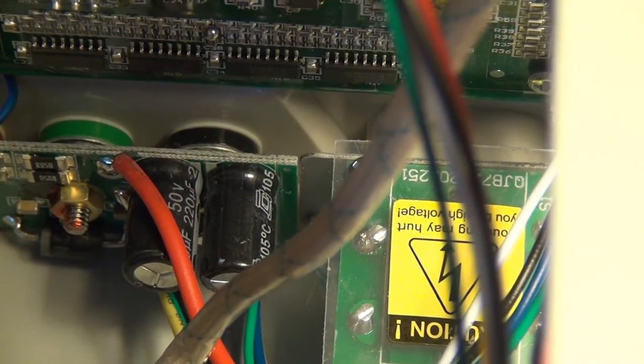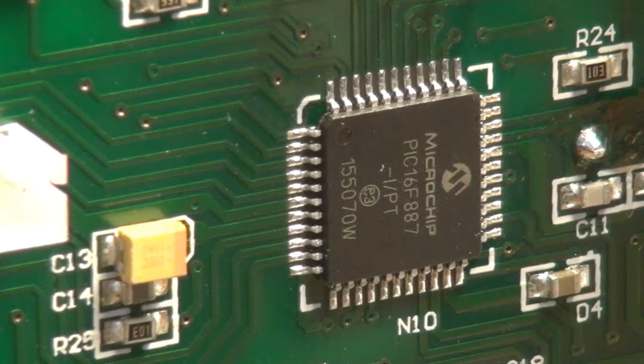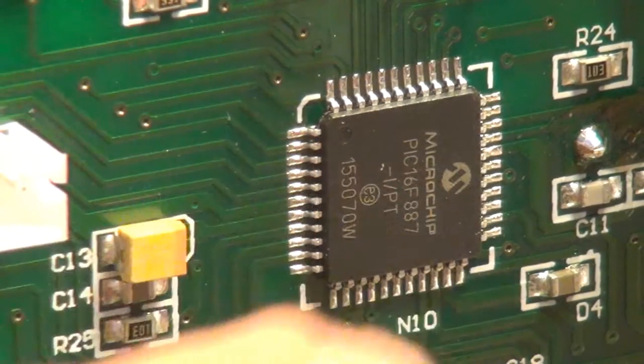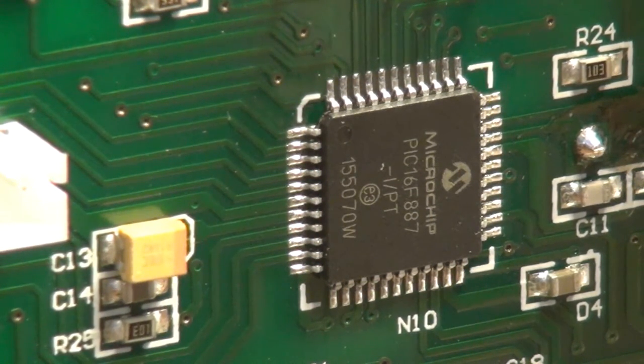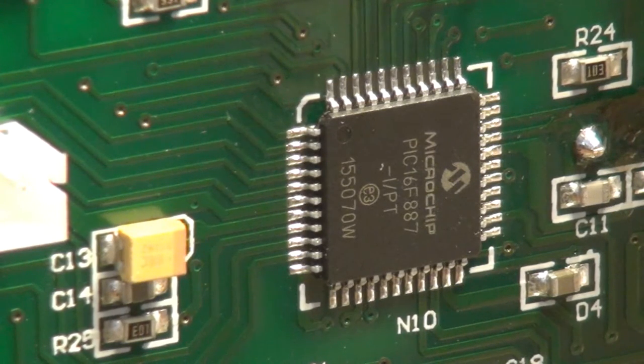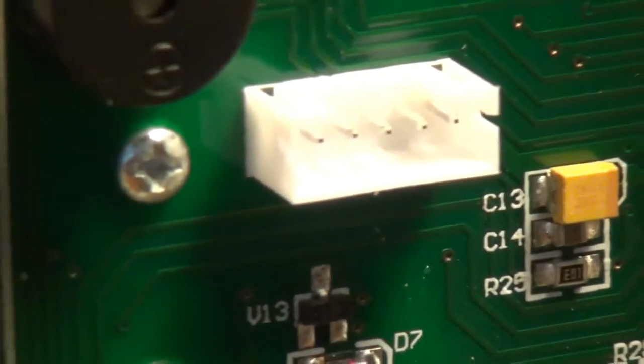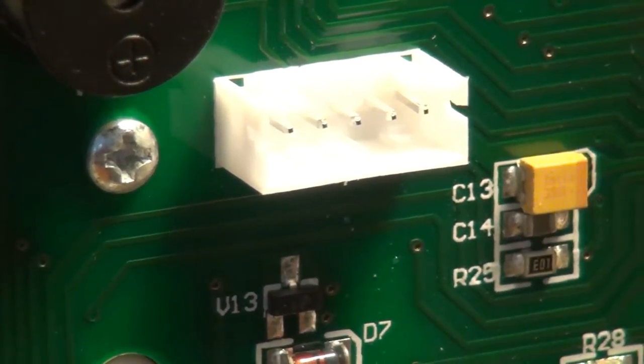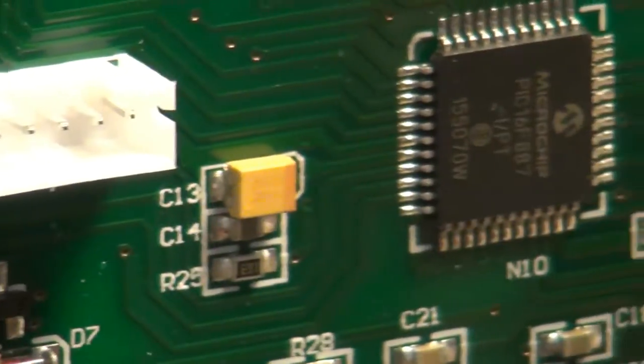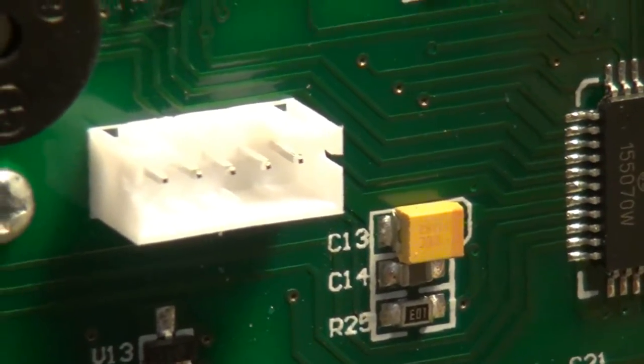Taking a look at the control board here, our main micro is a PIC16F877. This is probably doing all of the controls. It's also outputting to the display on the front. It's going to be reading your encoders for the knobs and turning the outputs on and off. Moving from the chip over here we have a five pin connector. This is probably the programming connector for this micro here.